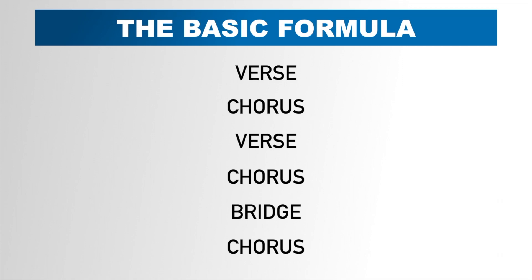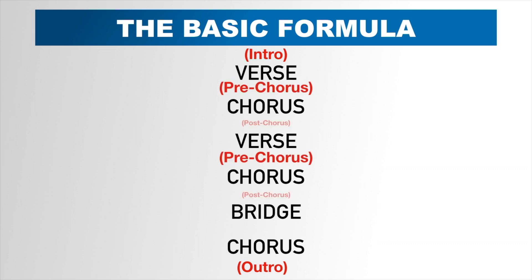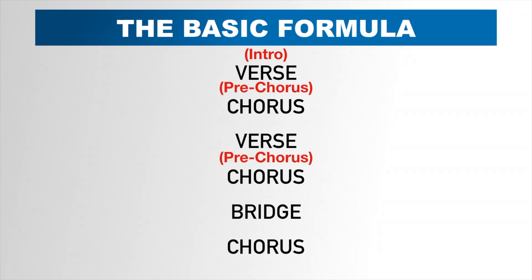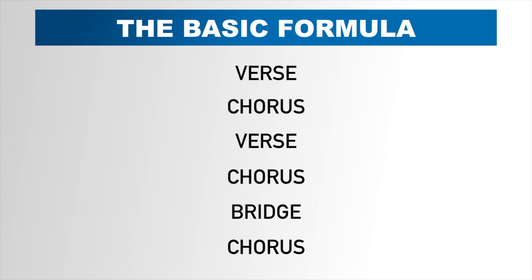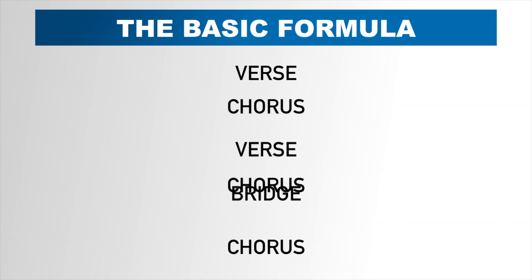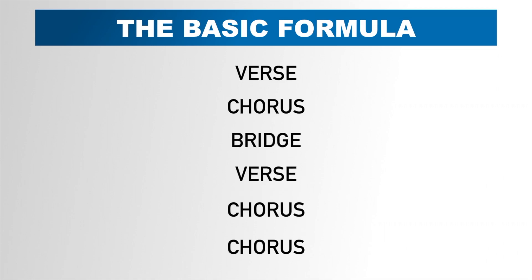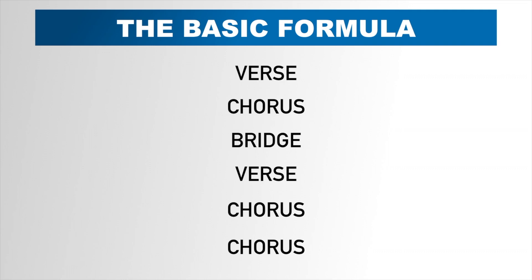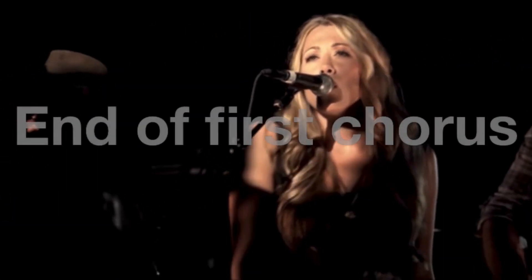If you want to spice things up, you can add an intro, an outro, and use transitions such as pre-choruses and post-choruses. Keeping certain elements in while taking some out can also give you some nice variety. You can even completely move one section to another part of the song — like taking the bridge and putting it right after the first chorus. After all, this is what Colbie Caillat and Jason Mraz did in their song Lucky.